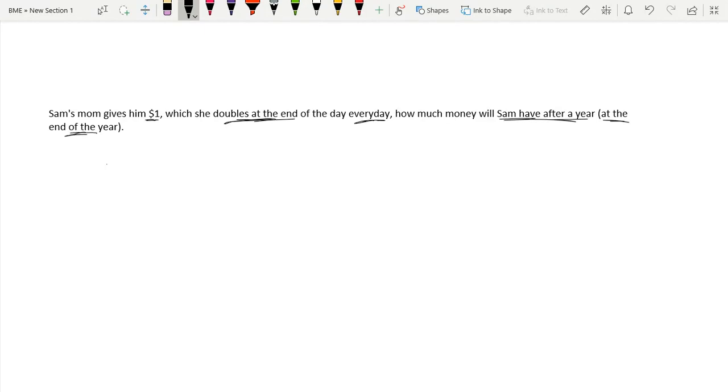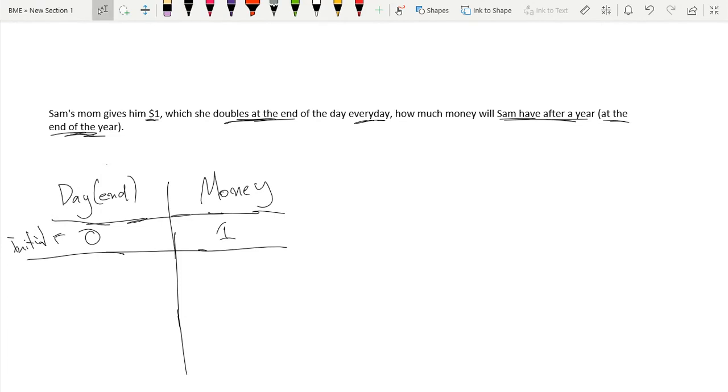Okay, so let's make a table here: day by bracket end, and then let's do money. So on day zero, which is just our very initial day when Sam just gets that one dollar, Sam will have one dollar. But then by the end of day one, because this is day end, Sam will have one times two, so he'll have one dollar times our rate of compounding, which is doubling, so two.